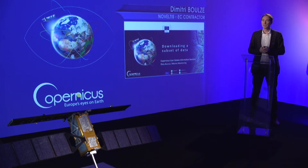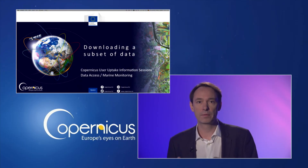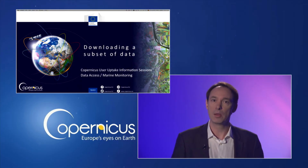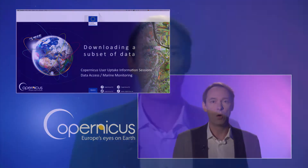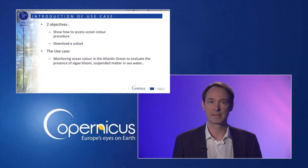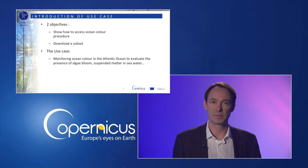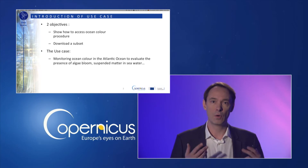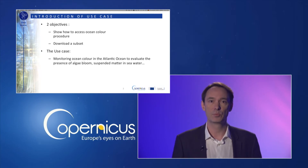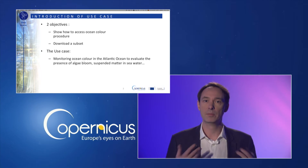It is dedicated to the accessed products such as mass concentration of chlorophyll in seawater and optical property measurements giving information about transparency, organic materials and suspended matter in seawater. The objectives of the module are to show how to access ocean colour CMEMS products using a Python procedure and how to download a subset of data. The particular use case shown here concerns the monitoring of ocean colour in the North Atlantic Sea to evaluate the presence of algae bloom and suspended matter in seawater.